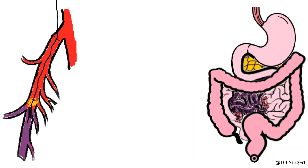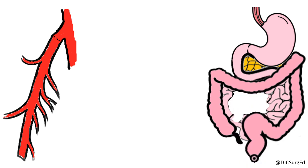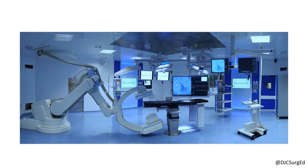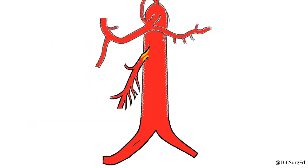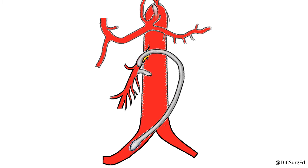Ultimately, the goal is to restore mesenteric blood flow and resect non-viable bowel. This is best accomplished in a hybrid operating room and, depending on the extent of disease, an SMA embolectomy or bypass is performed. Bypass choice can include a retrograde bypass from the right common iliac or infrarenal aorta, or an antegrade bypass from the supraceliac aorta, depending on the suitability of inflow vessels.